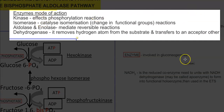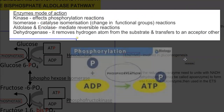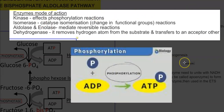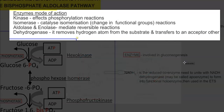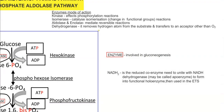Kinase refers to an enzyme that affects phosphorylation reactions. If an enzyme ends with isomerase, it catalyzes isomerization reactions — that is, changes in the functional groups of the molecules. Aldolase or enolase mainly mediate reversible reactions inside the cell. If it is a dehydrogenase, it is involved in the removal of a hydrogen atom from the substrate and transfers it to an acceptor molecule, which may be other than oxygen.